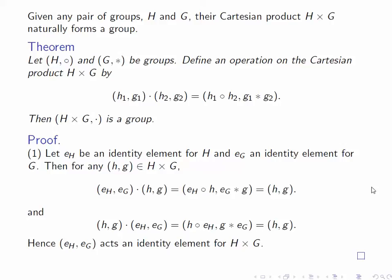We claim that the pair (E_H, E_G) is an identity for the Cartesian product. To do this, we have to choose an arbitrary element (h,g) in H cross G and multiply it on the left by (E_H, E_G). By the definition of multiplication in the Cartesian product, this is E_H circle h, E_G star g. By the definition of an identity element in H and G respectively, this is just (h,g).